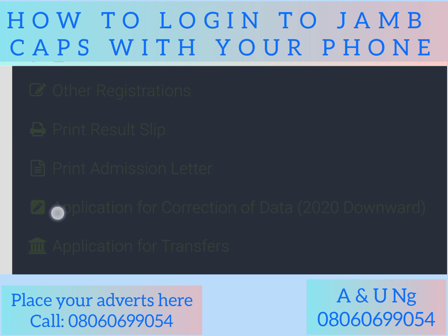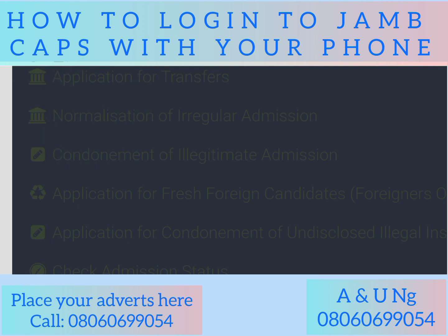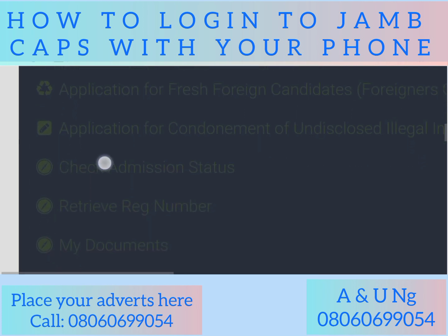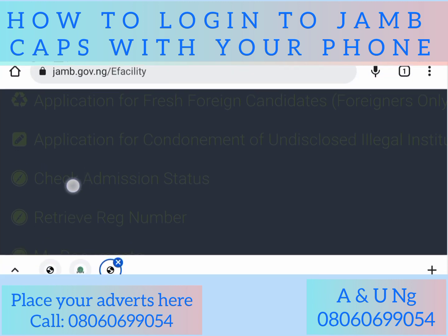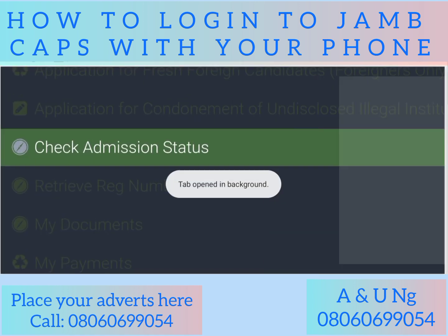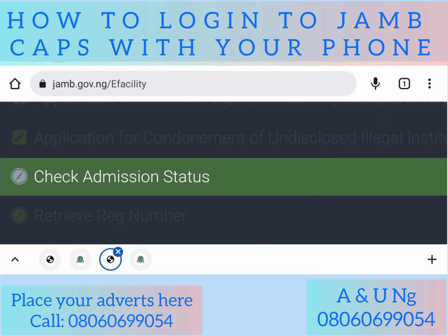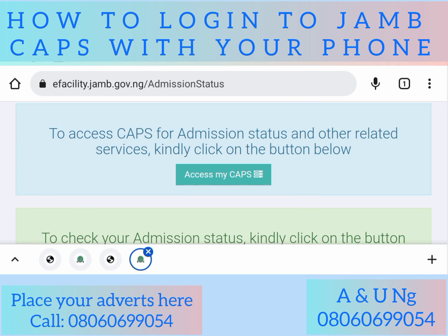Let me make things bigger so you can see clearly. That same 'Check Admission Status' we saw before — that's where we are still going to look. You touch it and choose to open in a new tab. Once you have opened the new tab, look at 'Access My CAPS' — it is now open.